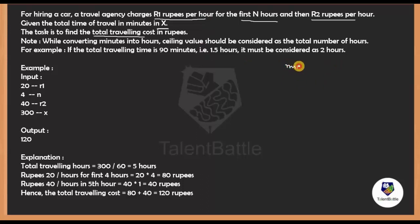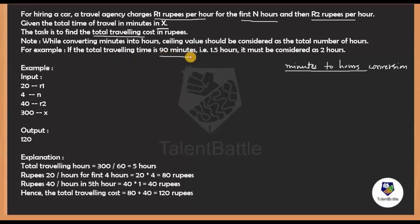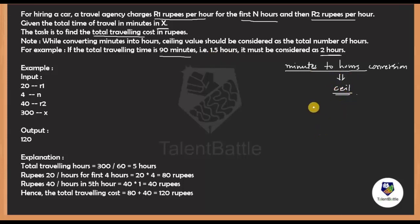A note is provided: while converting minutes into hours, the ceiling value should be considered as the total number of hours. Minutes to hours conversion is required because the calculations of charges are in terms of hours but the travel time is given in minutes. For example, if the total traveling time is 90 minutes, the normal formula gives 1.5 hours, but we should consider it as 2 hours using the ceiling function.